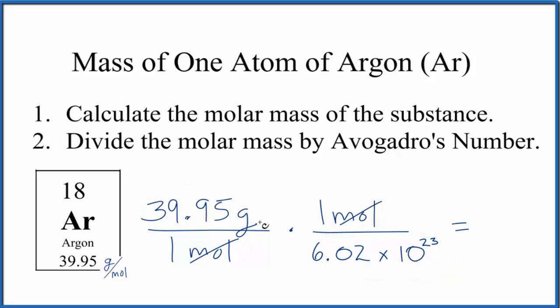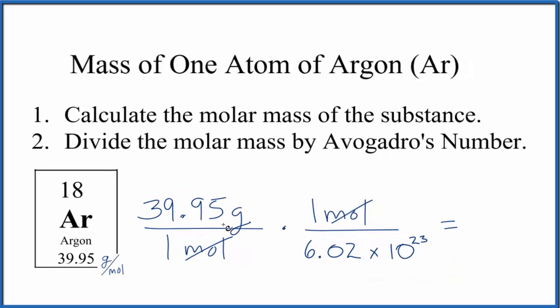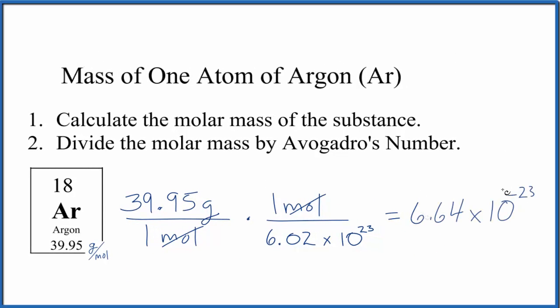But doing it this way is a good way to make sure you have the right units. So we do the math. We get 6.64 times 10 to the negative 23rd, and the units are grams.